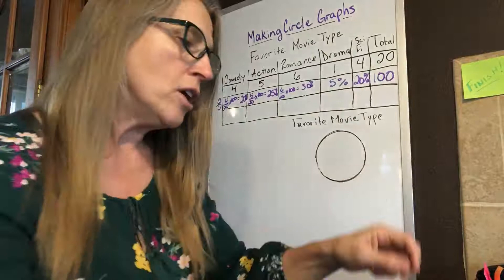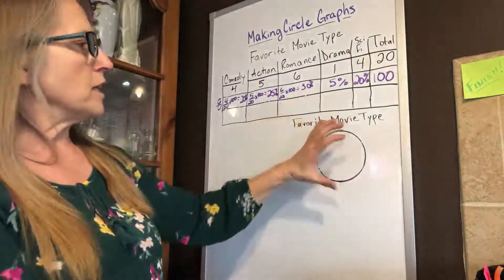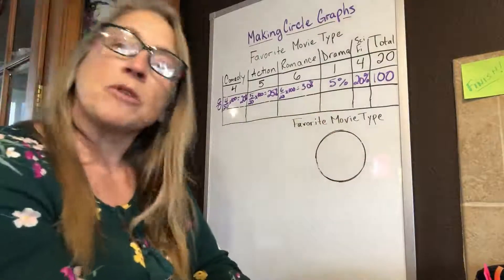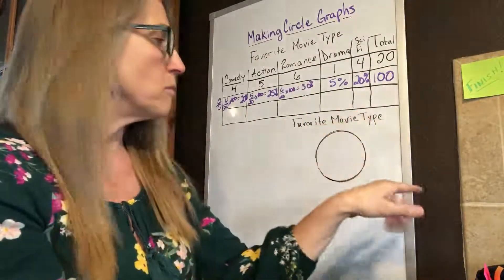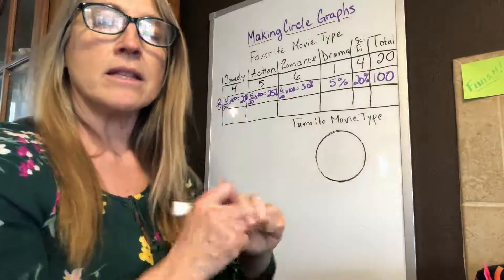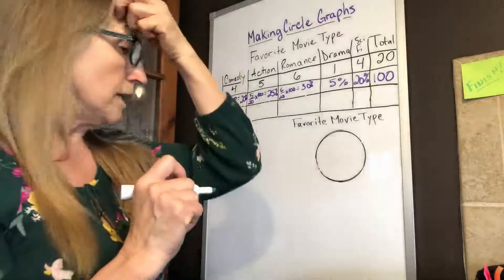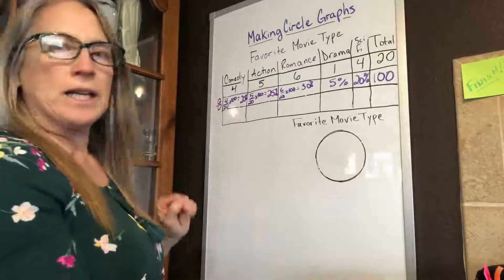So 20 plus 25 is going to give us 45, plus 30 is 75, plus 5 is 80, plus 20 is 100%. So perfect, that worked out really well. Now we want to graph each of these percentages on our circle and have it take up the appropriate degrees on our circle. We want to make sure that we remember how many degrees are in a circle - there's 360 degrees, right?